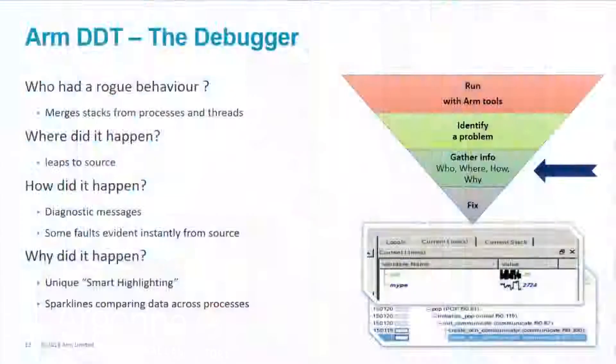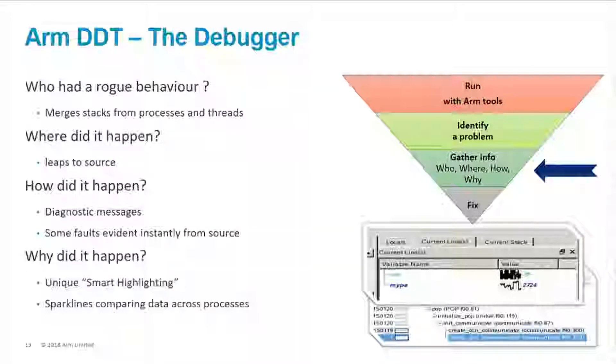Switching focus to DDT, the debugger. Once you know you've got a problem, you can run it with our debugger. There are a few questions to ask yourself: who had rogue behavior? Where did it happen? How did it happen? Why did it happen? DDT has several features to help make gathering this type of information straightforward.